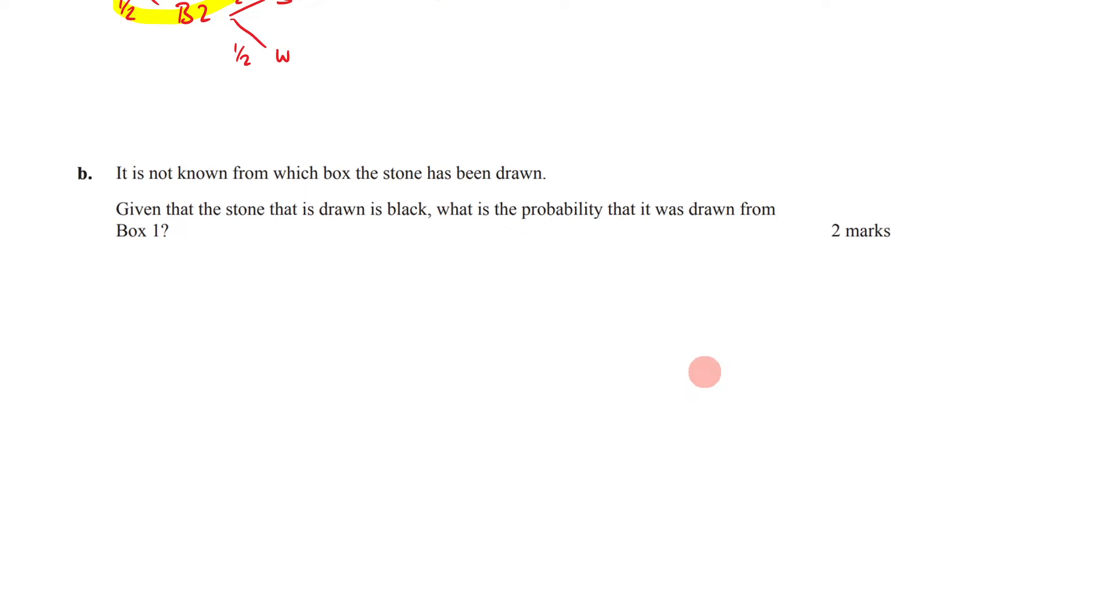It is not known from which box the stone has been drawn. Given that the stone that is drawn is black, what is the probability that it was drawn from box one? Okay, so we've got a given question here. So that means we're dealing with conditional probability.